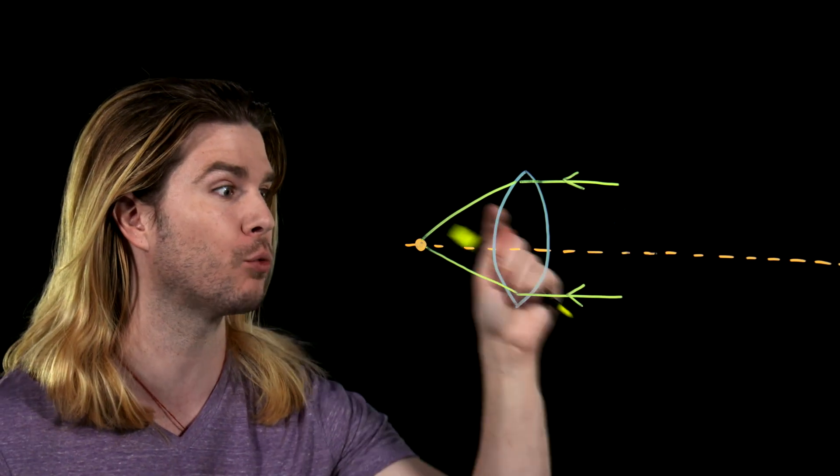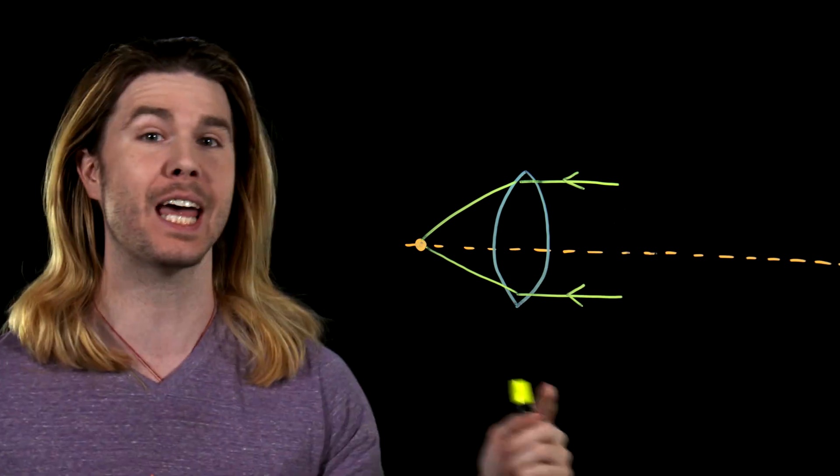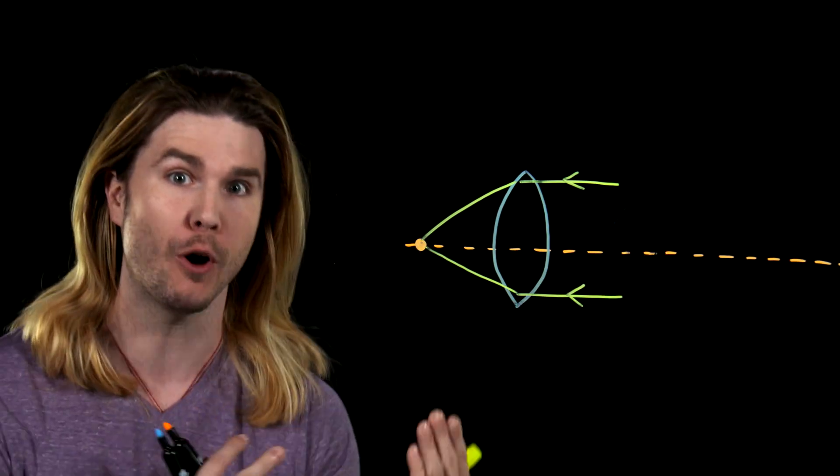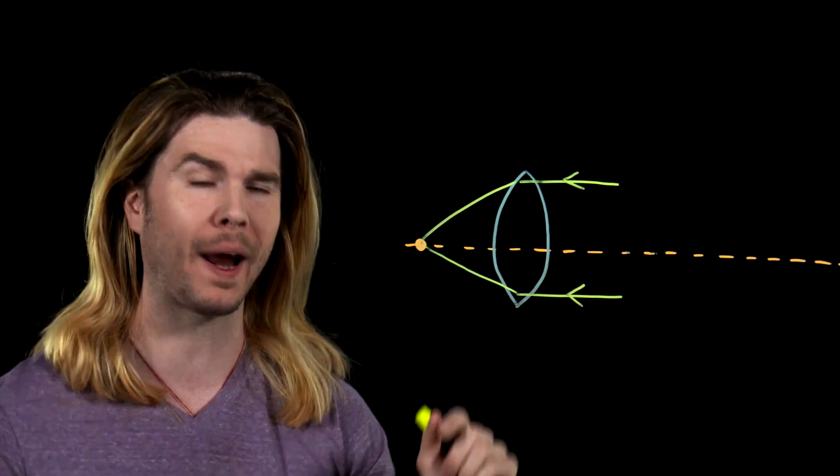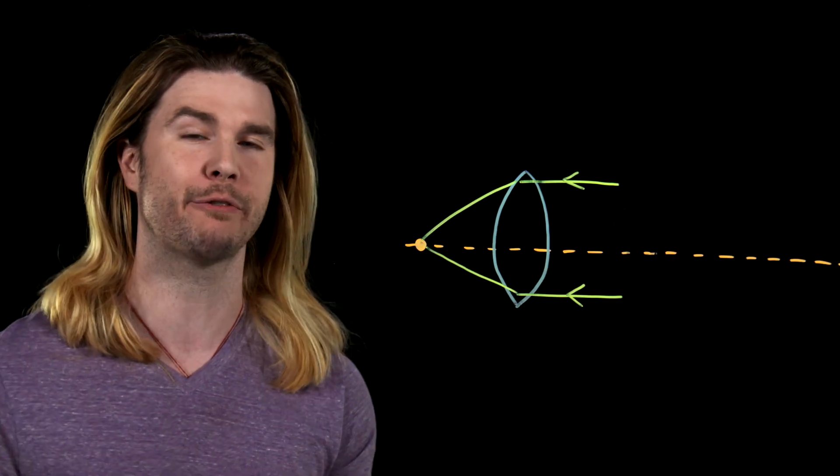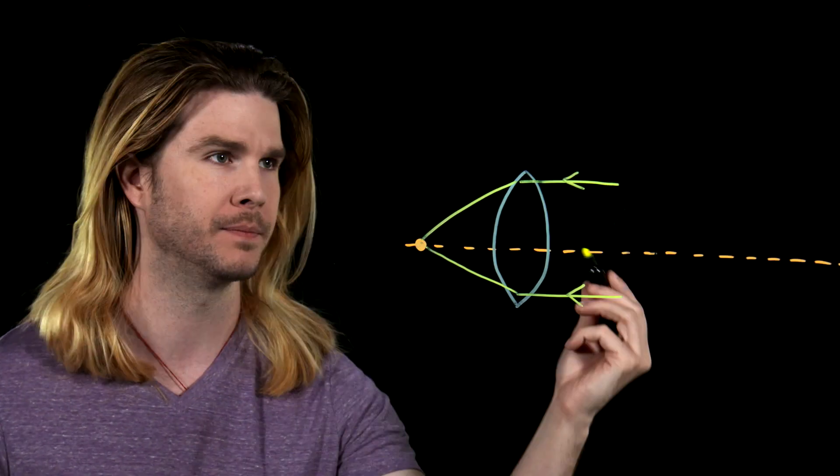For example, these parallel rays of light get bent and then focus into the focal point of this lens. This bending, this refraction, is what allows for magnifying glass magnification.